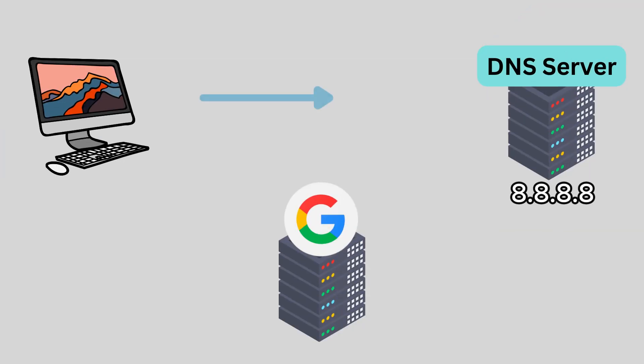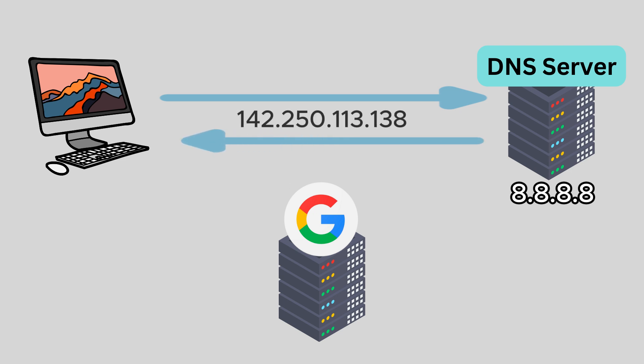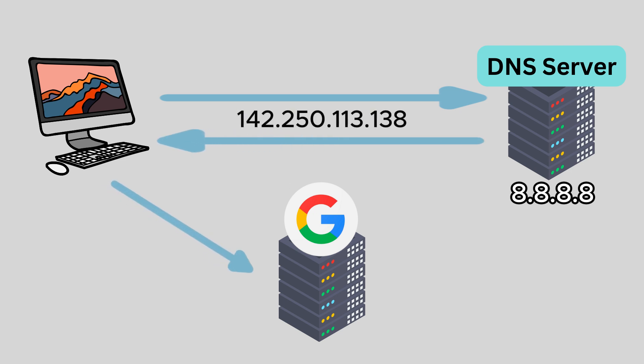For example, to elaborate on our example of google.com, your computer would send a DNS request asking for the IP address under the google domain name. Then the DNS server sends back an IP address that the client uses to connect to the Google servers, allowing you to reach their website.